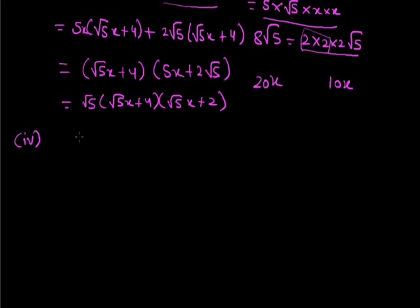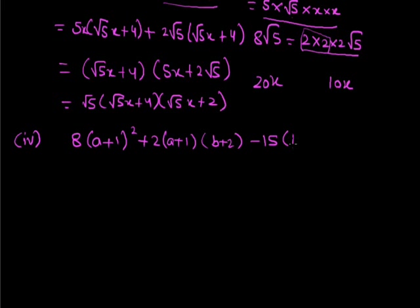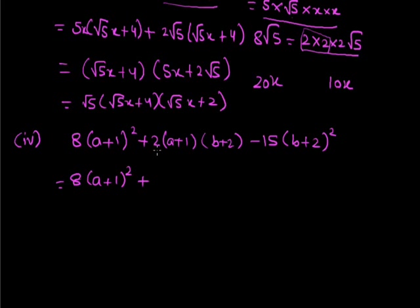Now let us see one more example: 8(a+1)² + 2(a+1)(b+2) - 15(b+2)². The first term is 8(a+1)², where (a+1)² = (a+1)(a+1), and the last term has (b+2)² = (b+2)(b+2). Both split terms will contain (a+1)(b+2). The coefficients 8 and 15 must be split so that their combination gives the middle coefficient 2.